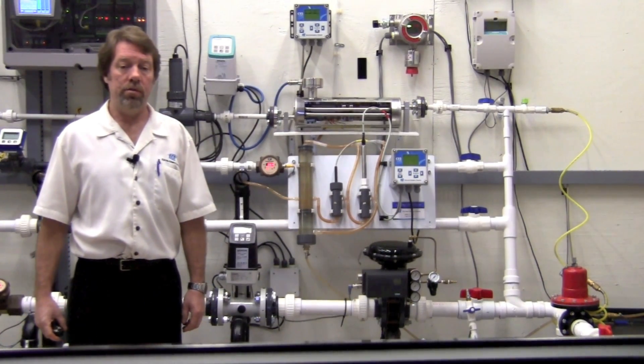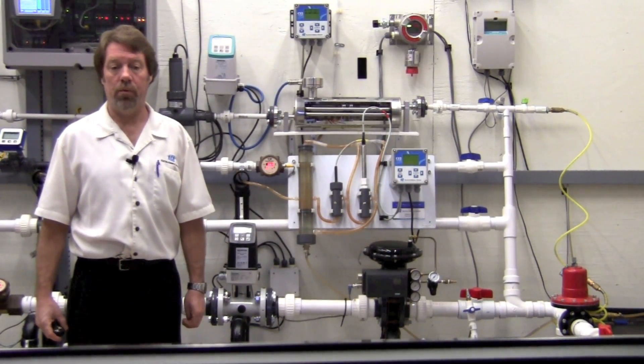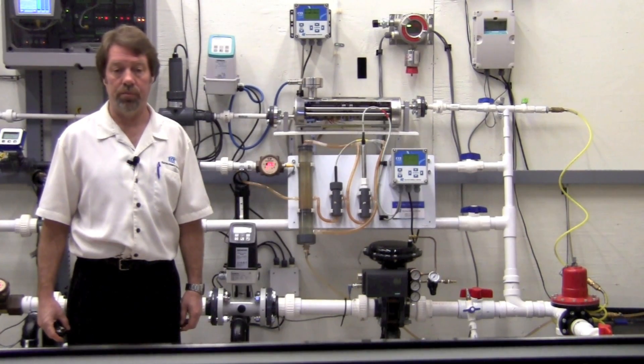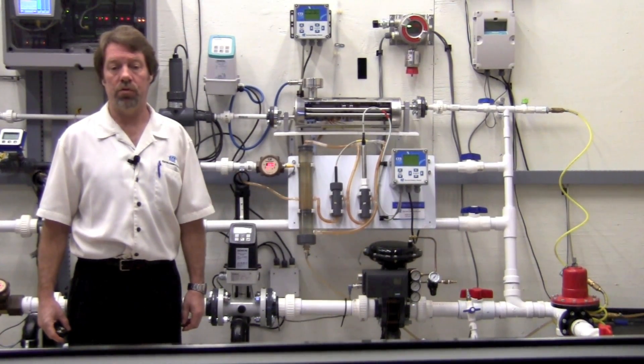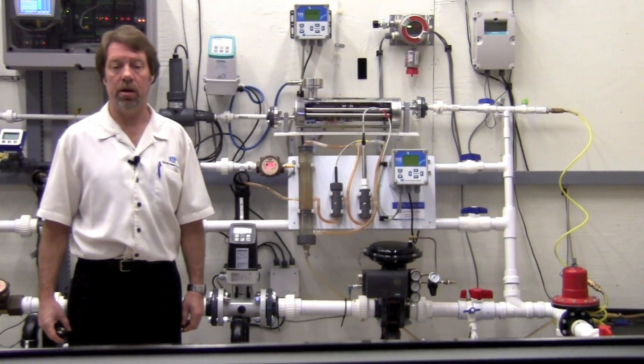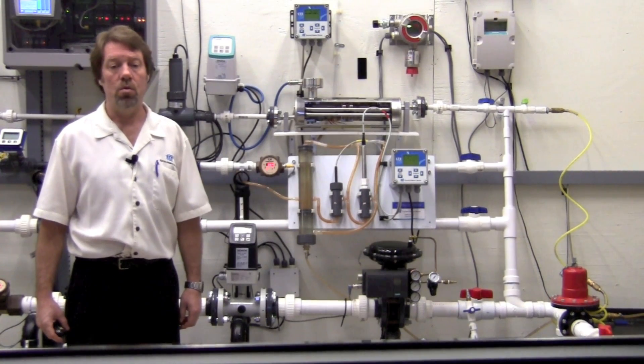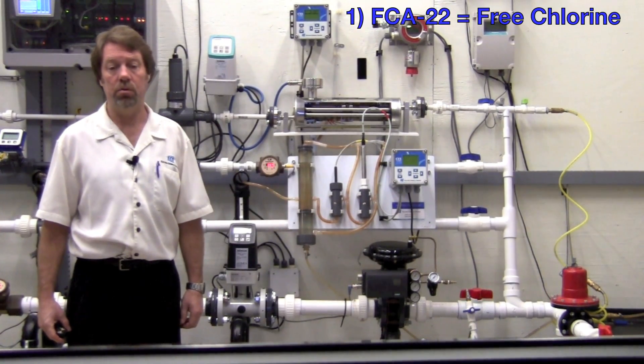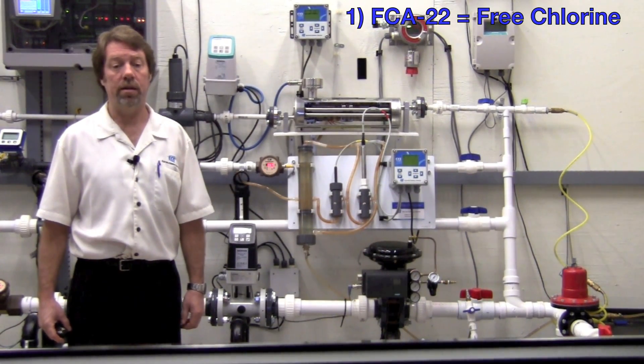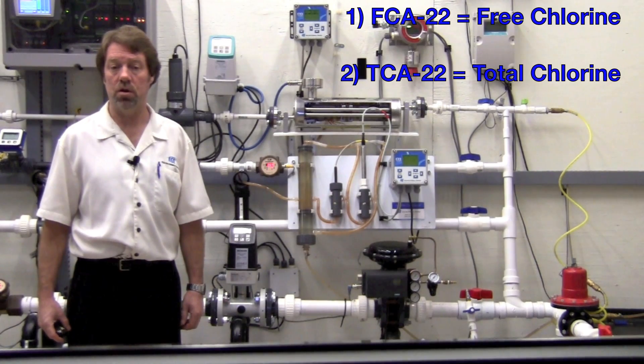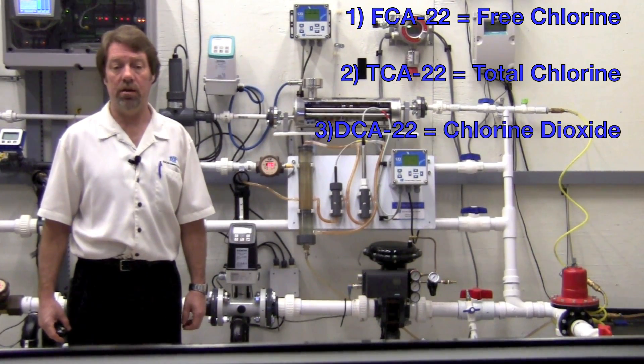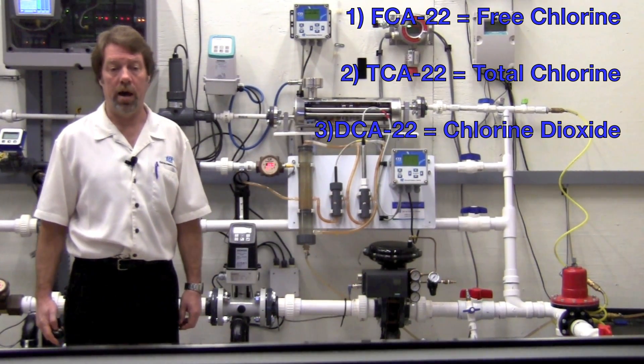The chlorine systems are a complete and ready-to-use chlorine monitoring and control system. The systems can be used for one of three measurements depending on the chlorine sensor being used. We've got the FCA-22 which is for free chlorine, the TCA-22 which is for total chlorine, and the DCA-22 which is for chlorine dioxide.